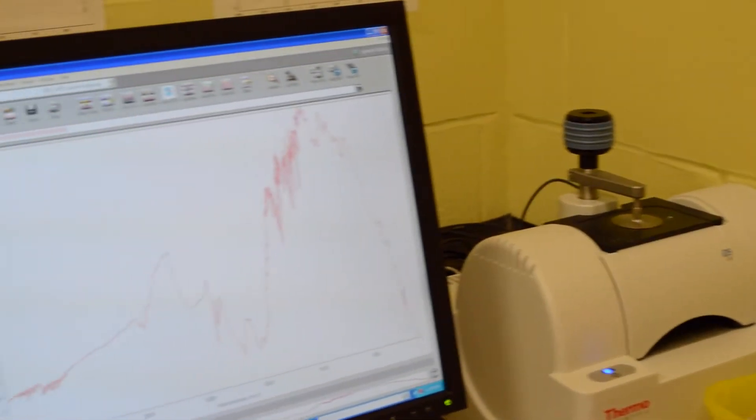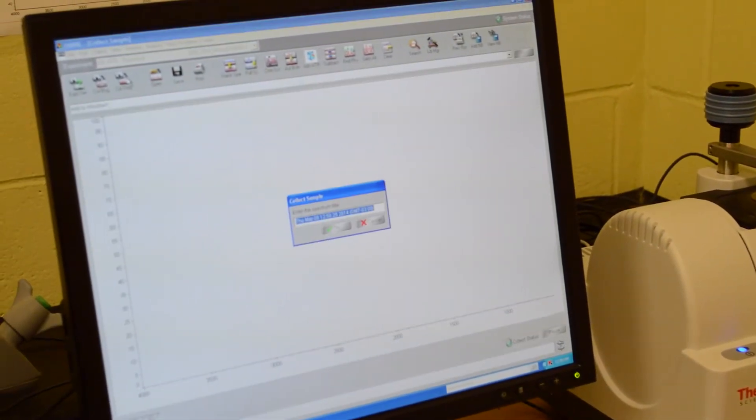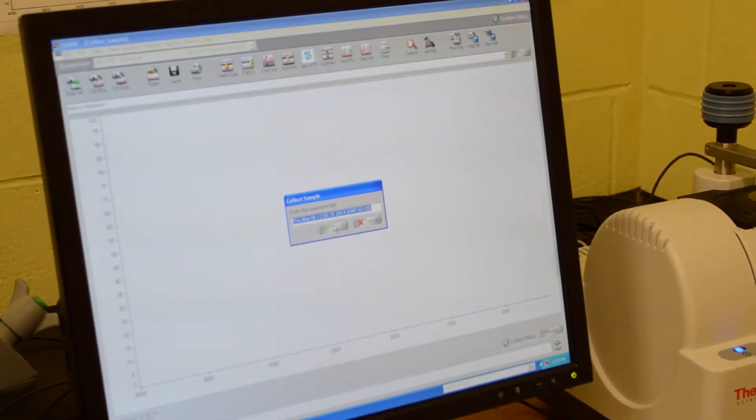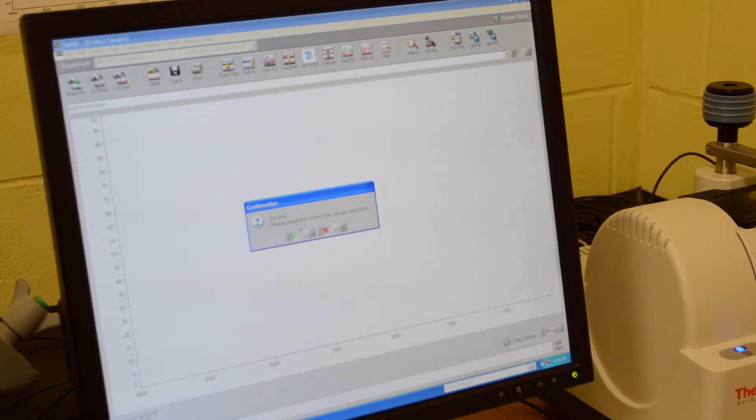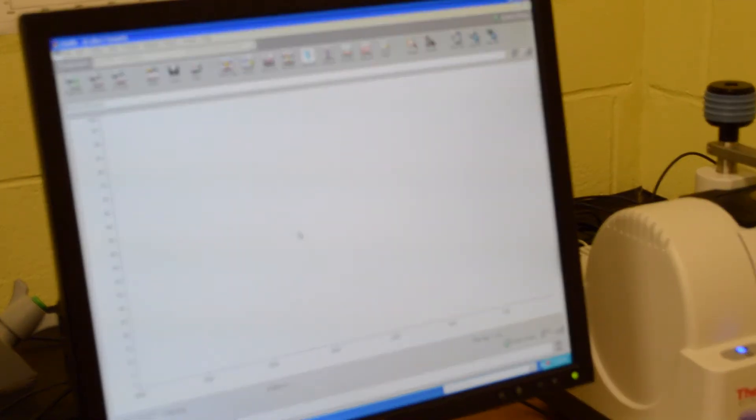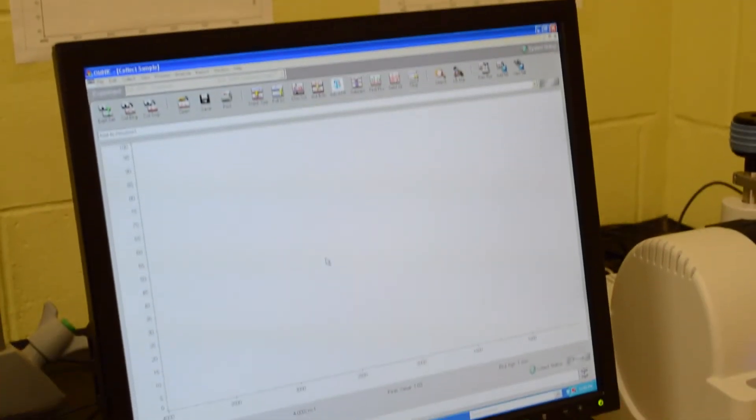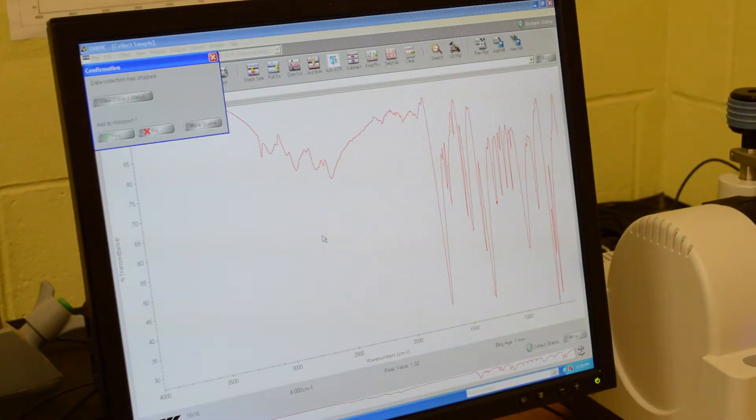So just press collect sample. You can change the spectrum title if you'd like to but I usually just use the date and time. And it will collect by scanning 16 times as well. So it asks if you want to add it to the window and you say yes.